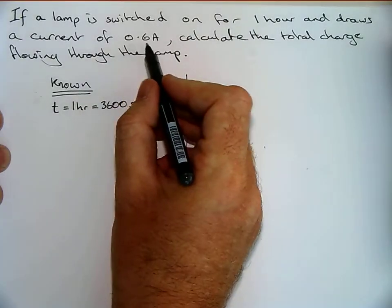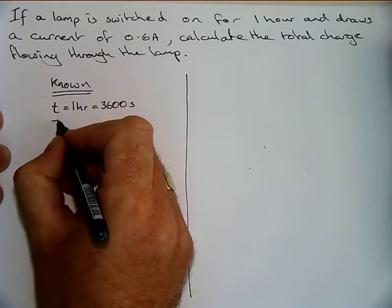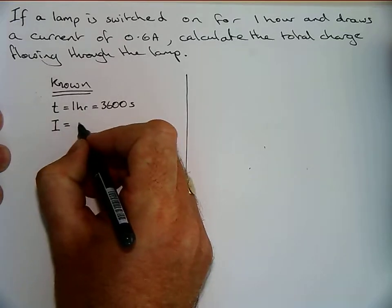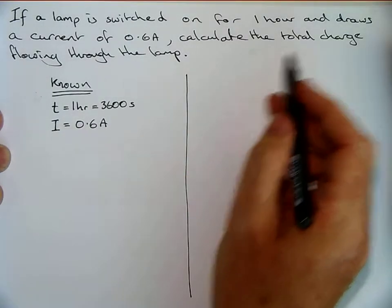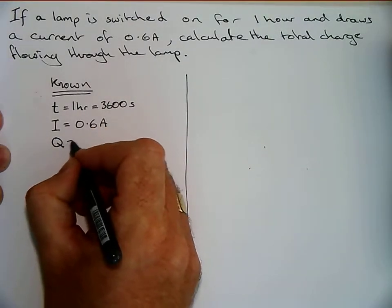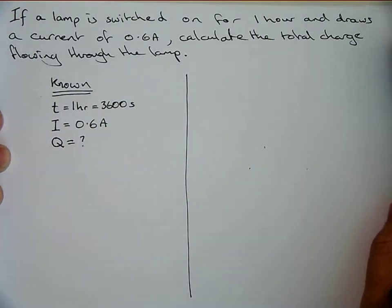We also know that it's got a current of 0.6 amps, that's capital I for current, 0.6 amps. And we are required to find the total charge, and charge has like a Q, so that gets the question mark.